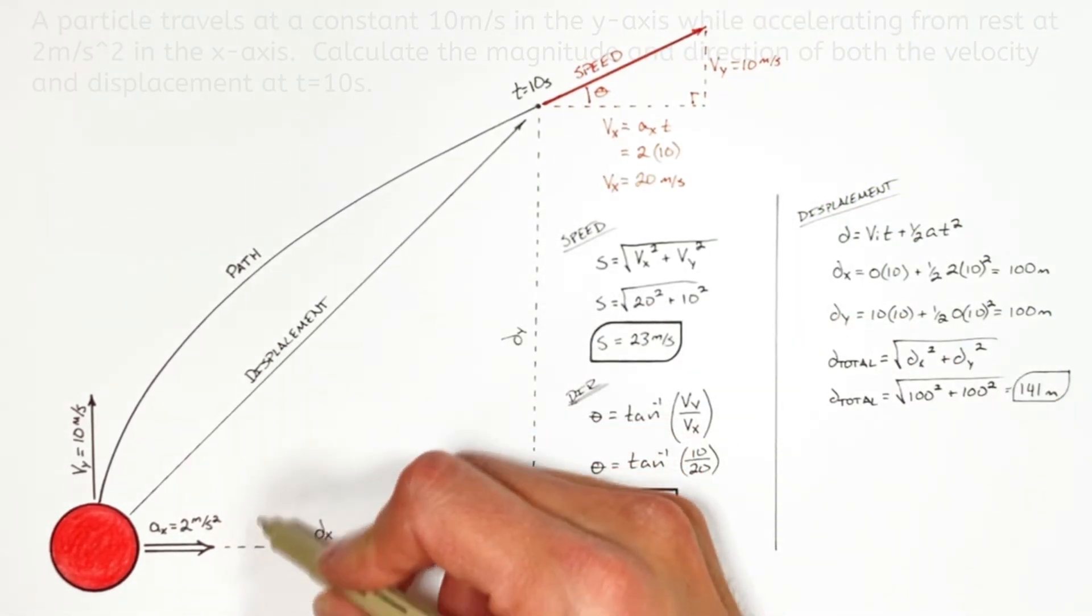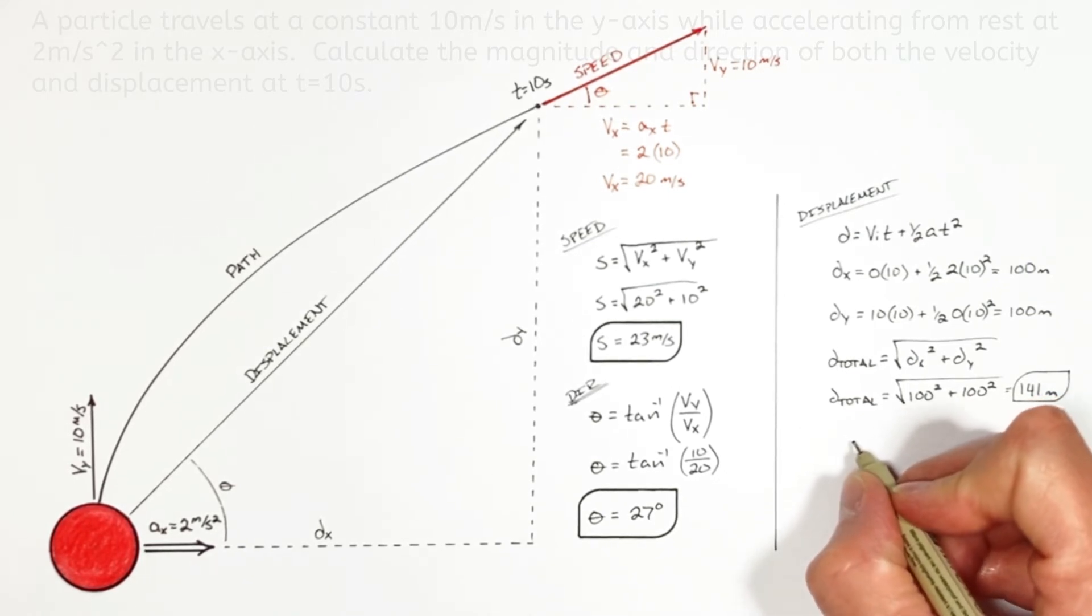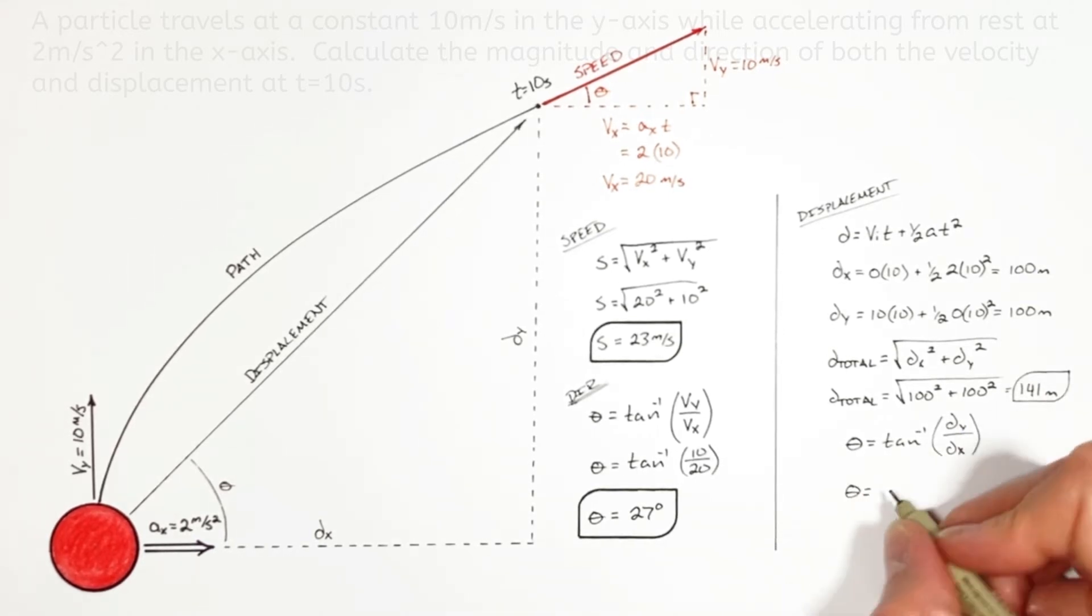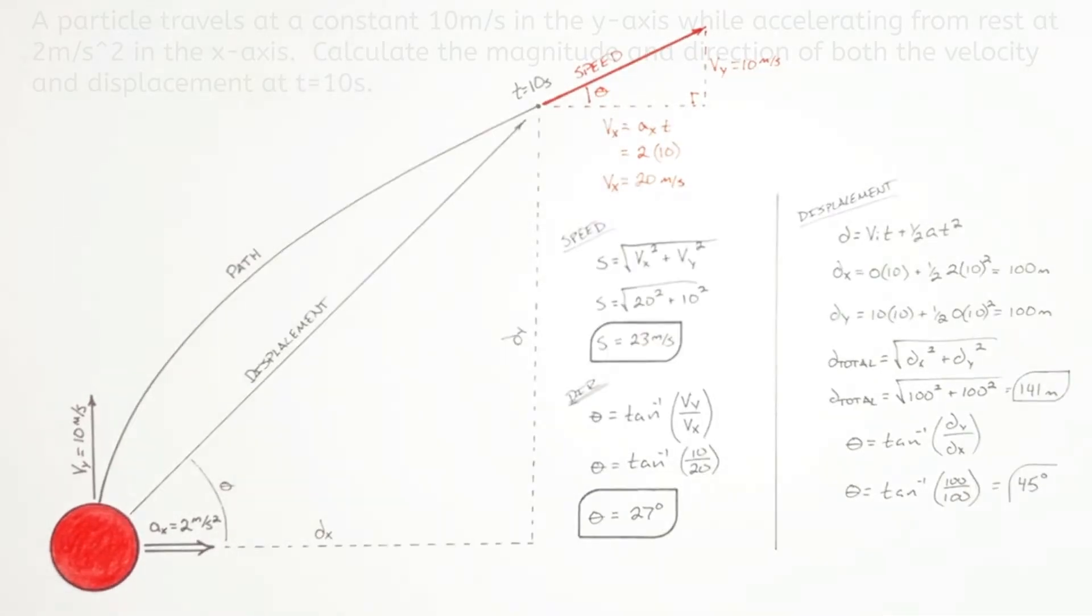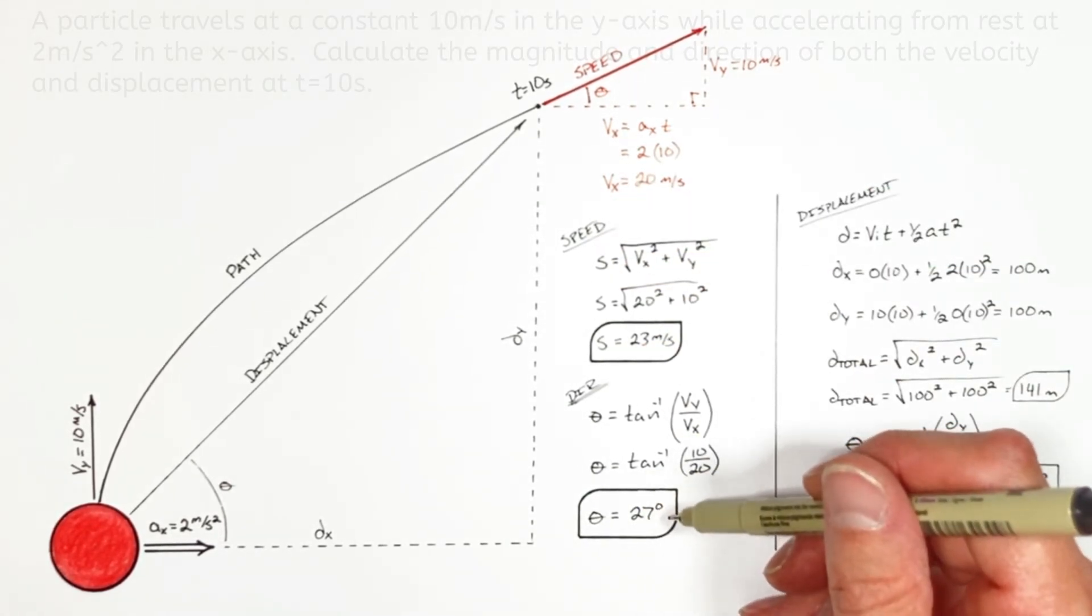Now it's looking at the direction of this displacement that people really manage to mess this problem up and I'll show you how. Just like we use the components of velocity and tangent to solve for the direction of the velocity vector, we're going to use the components of the displacement and tangent to solve for the direction of the displacement vector. And this displacement is 45 degrees which is not the same as the actual direction the ball is traveling.